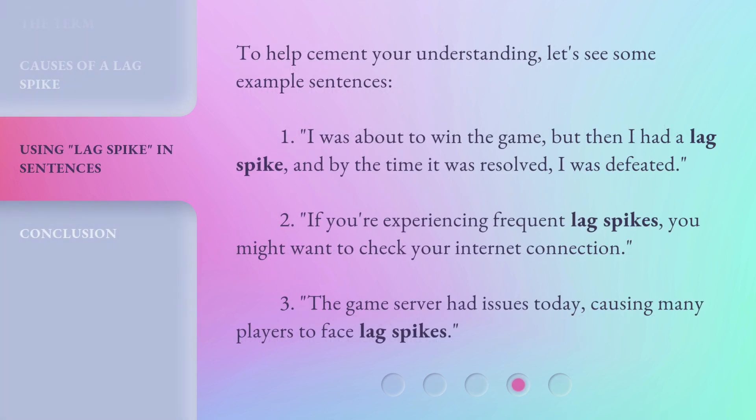Four, background applications — running many applications or downloads in the background can slow down your internet speed. To help cement your understanding, let's see some example sentences. One: I was about to win the game but then I had a lag spike, and by the time it was resolved I was defeated. Two: if you're experiencing frequent lag spikes, you might want to check your internet connection. Three: the game server had issues today, causing many players to face lag spikes.